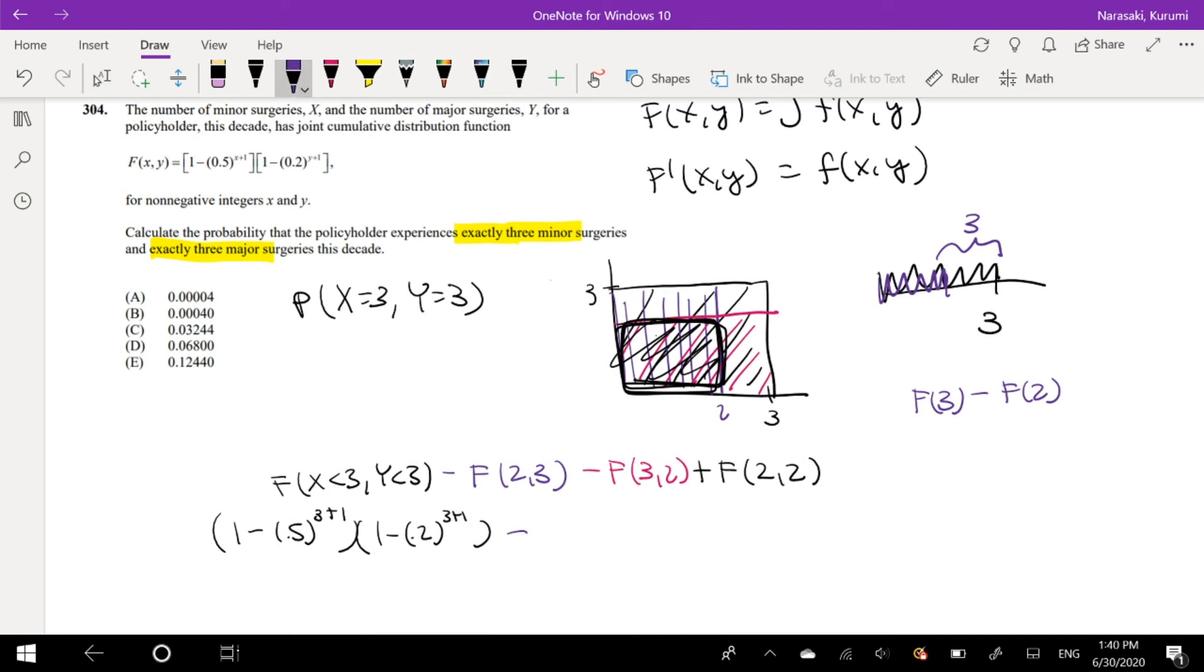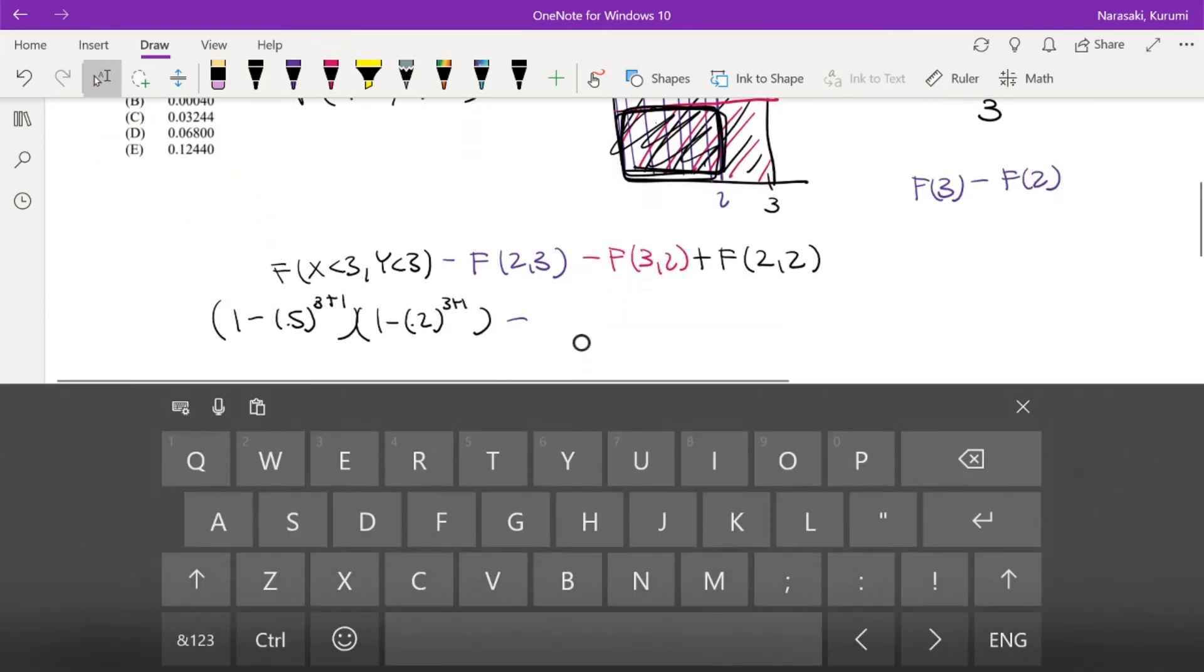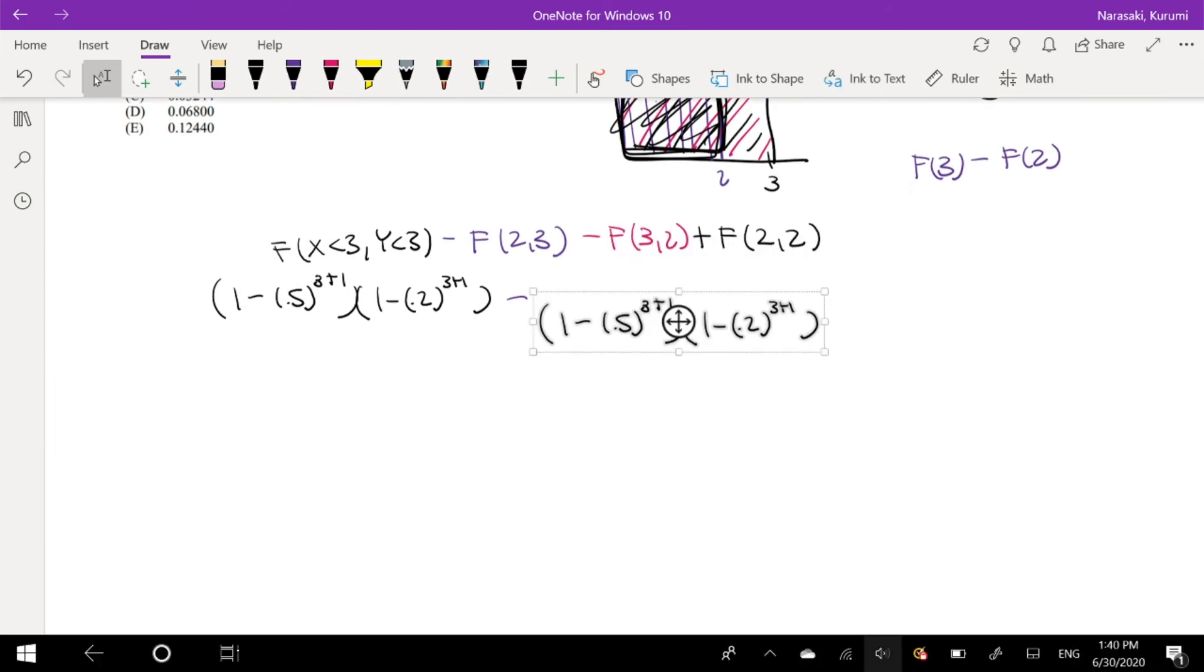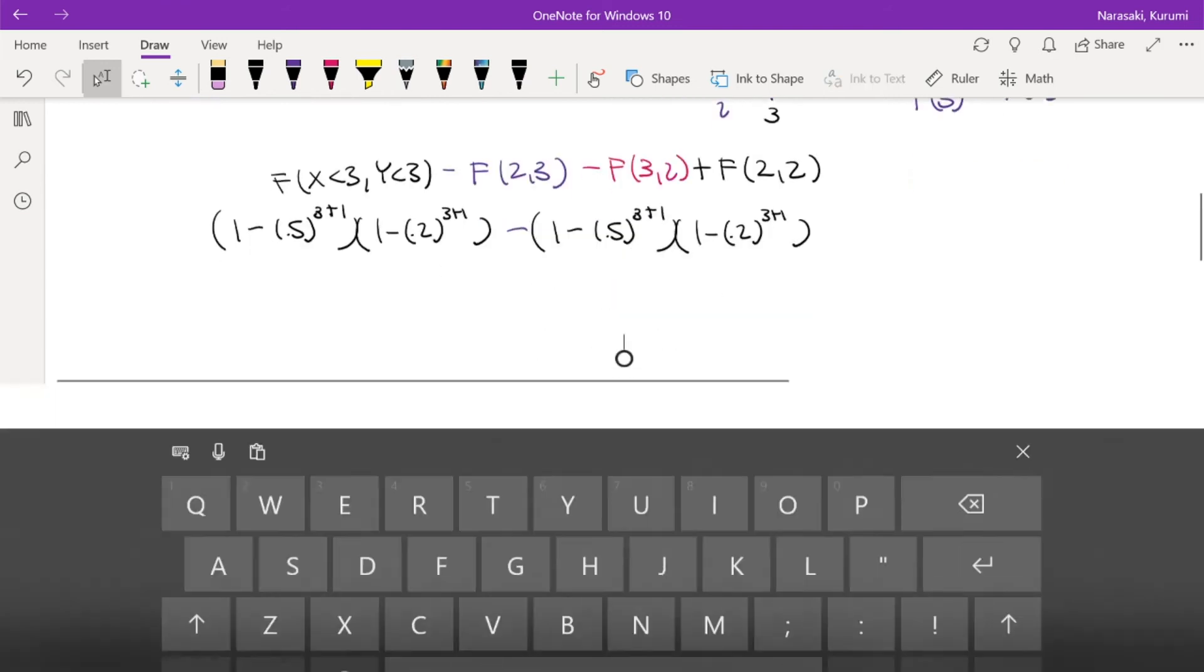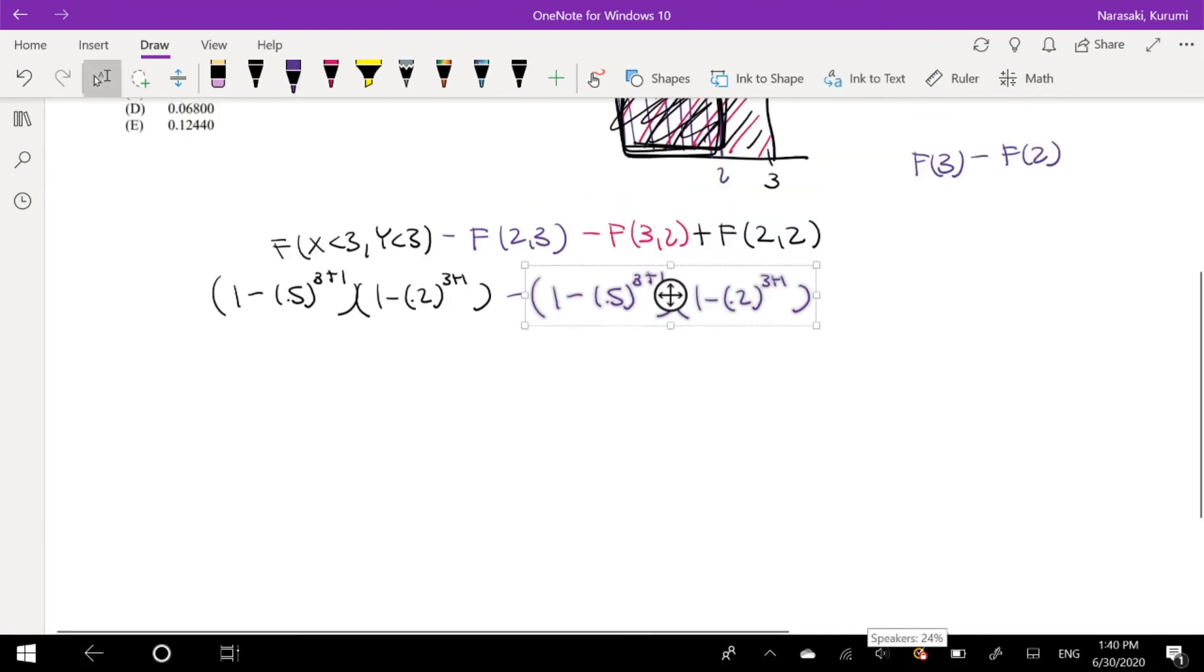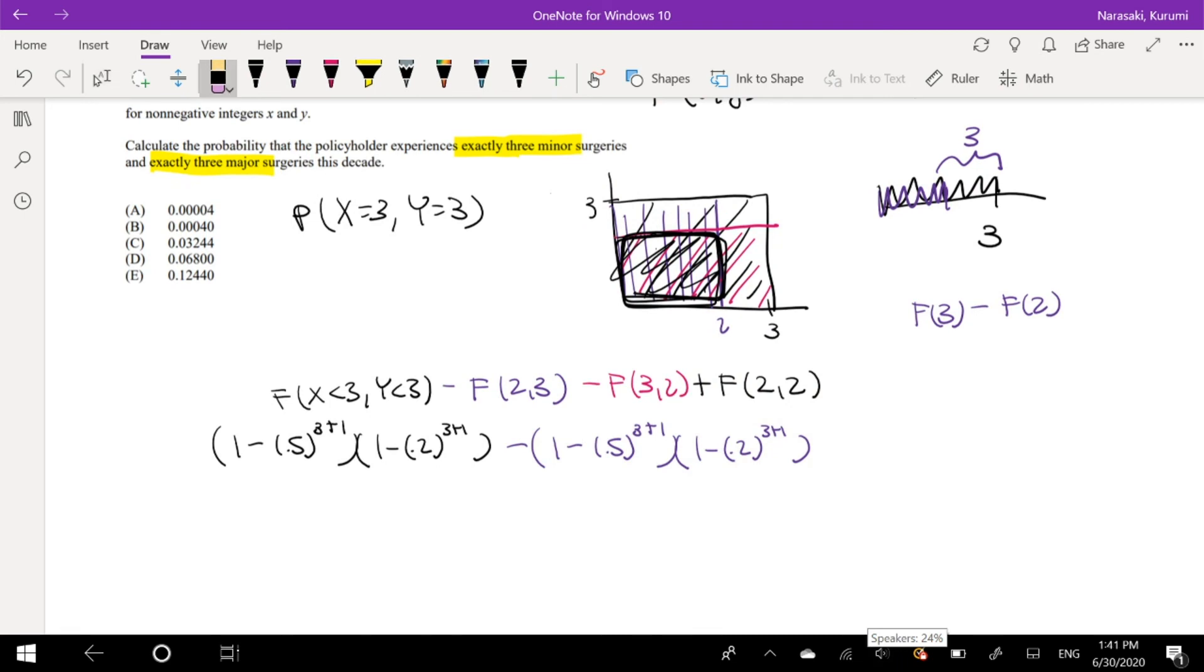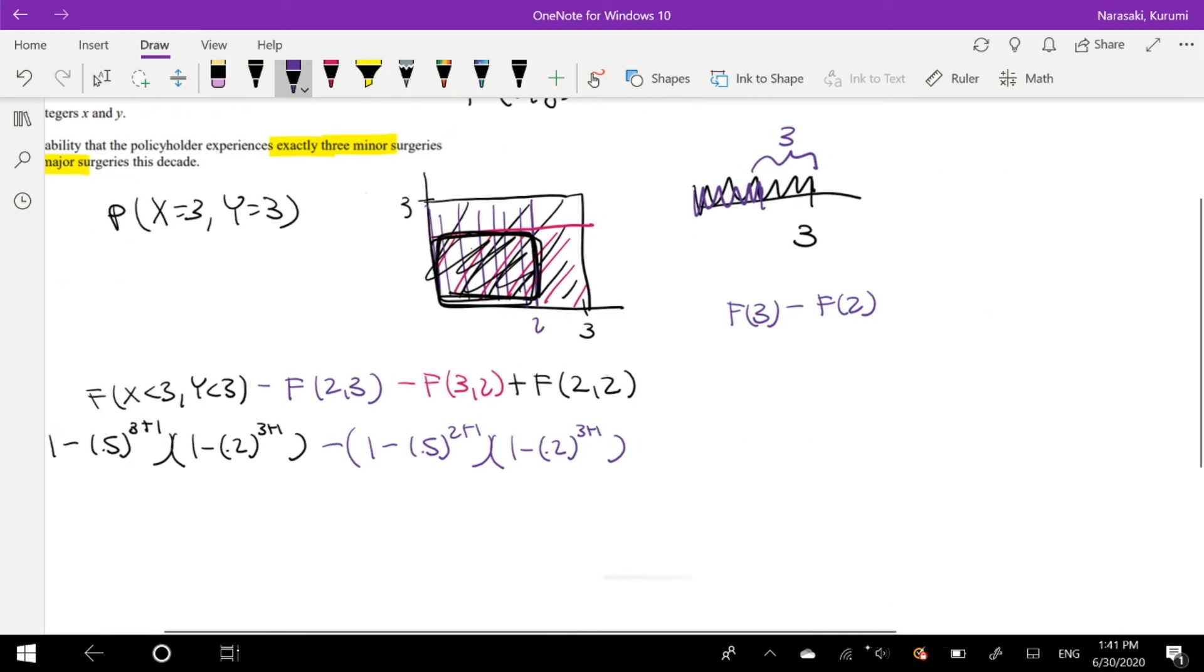And then minus this whole thing again. I'm going to copy and paste this. Except I want it in a different color. But this one instead of 3 plus 1, this one's going to be 2 plus 1, right?